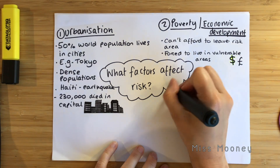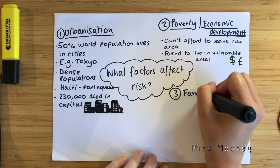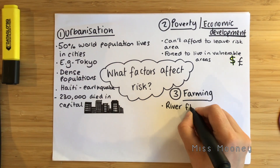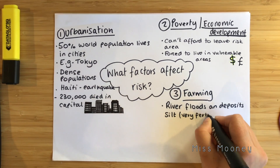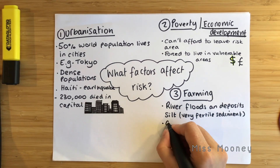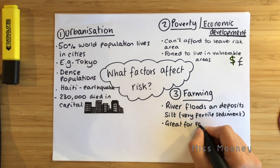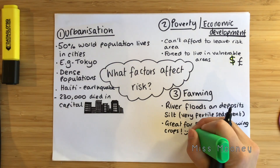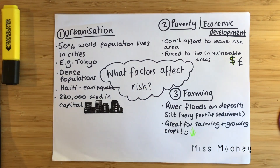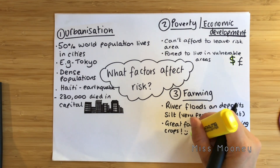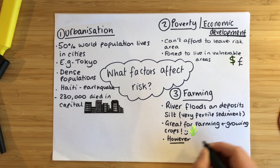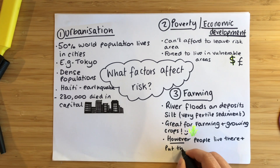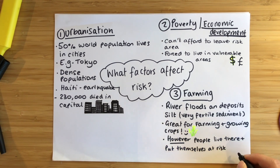The next factor affecting hazard risk is farming. People very often have farmland near rivers because when rivers flood, fertile silt is deposited on the floodplain. This is perfect to grow crops on because it has lots of nutrients to help plants and crops to grow. But when people choose to live there, they are putting themselves at risk. This is the case in Bangladesh, where many people live near the river Ganges on very low-lying land vulnerable to flooding in order to farm crops.